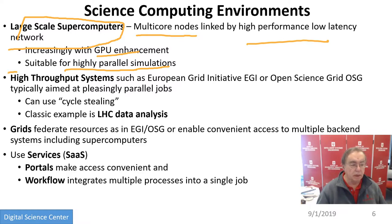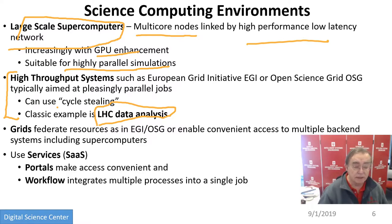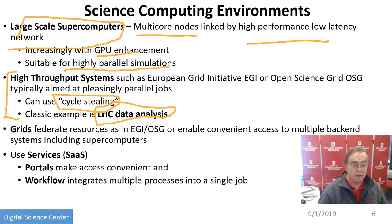Then we have high-throughput systems, which are much nearer clouds — except they're even simpler than clouds, because they're only doing pleasingly parallel jobs. The LHC data analysis, or work done analyzing signals looking for messages from outer space, are of that type. Cycle stealing — using idle personal computers — works for pleasingly parallel jobs because you don't have synchronization issues, so you can use machines at midnight.